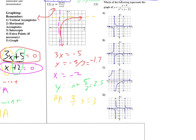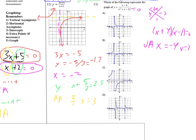For multiple choice, find key characteristics and match them to the options. Always start with vertical asymptotes — they're the most crucial. Set the denominator equal to 0: find two numbers that multiply to negative 12 and add to 1, giving (x plus 4)(x minus 3). Vertical asymptotes at x equals negative 4 and x equals 3. One answer choice had them at negative 3 and positive 4 — that's wrong, so eliminate it.